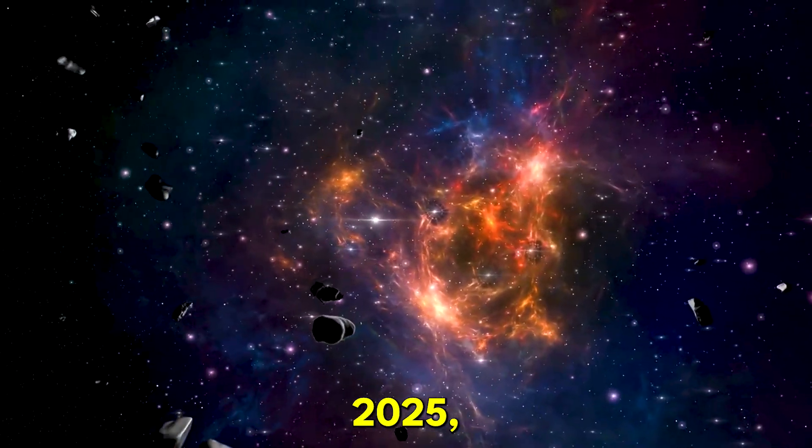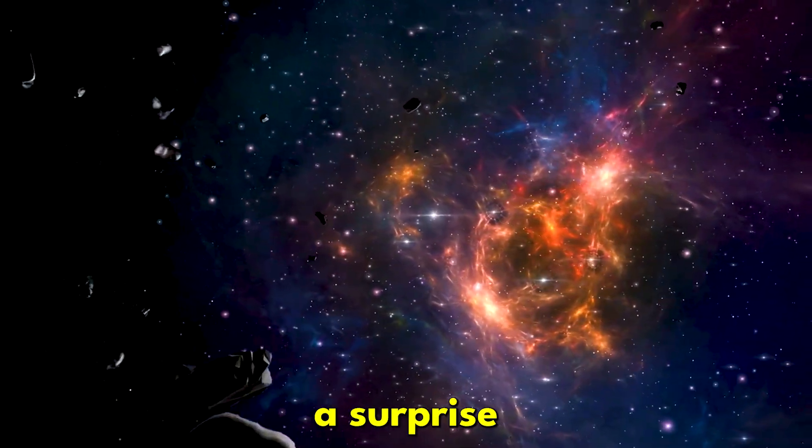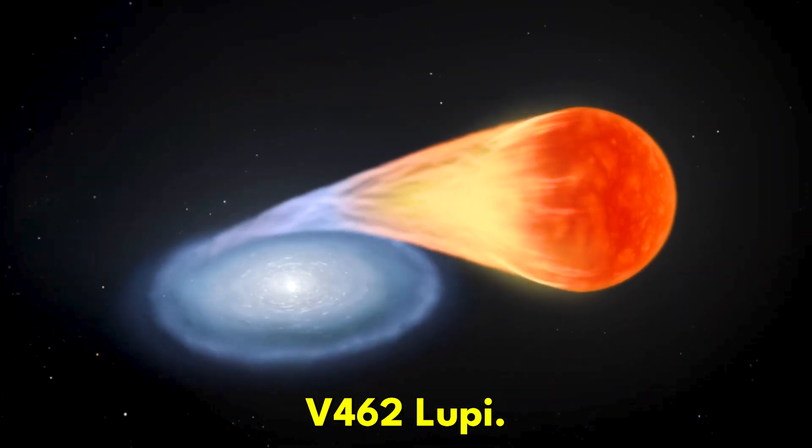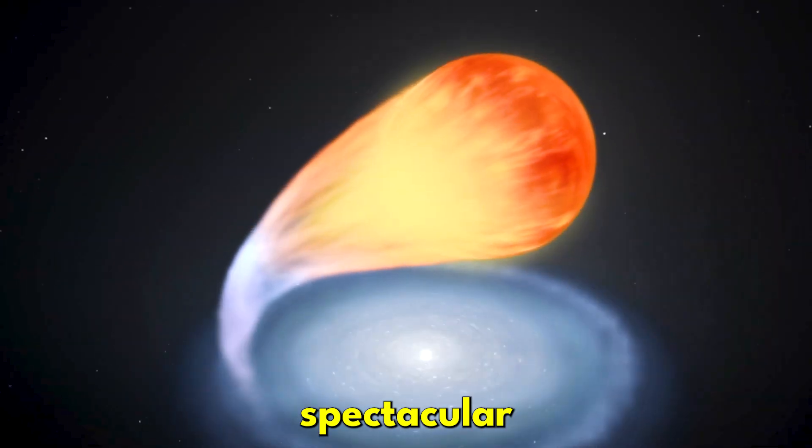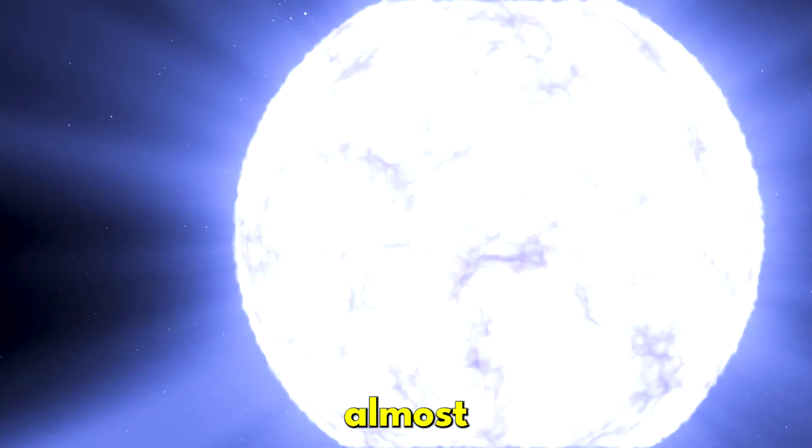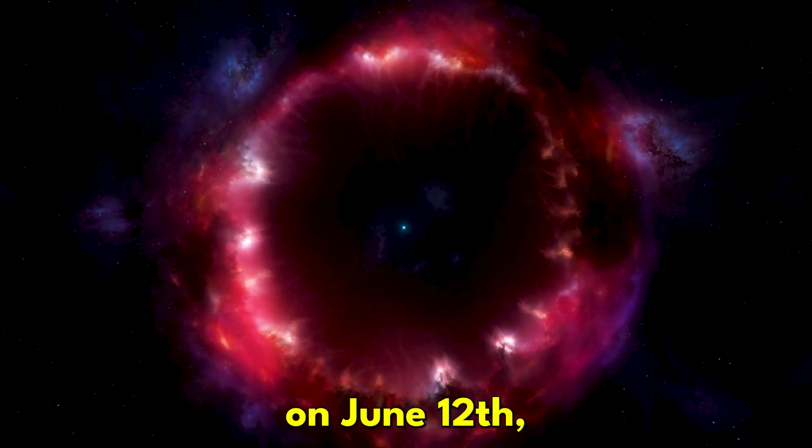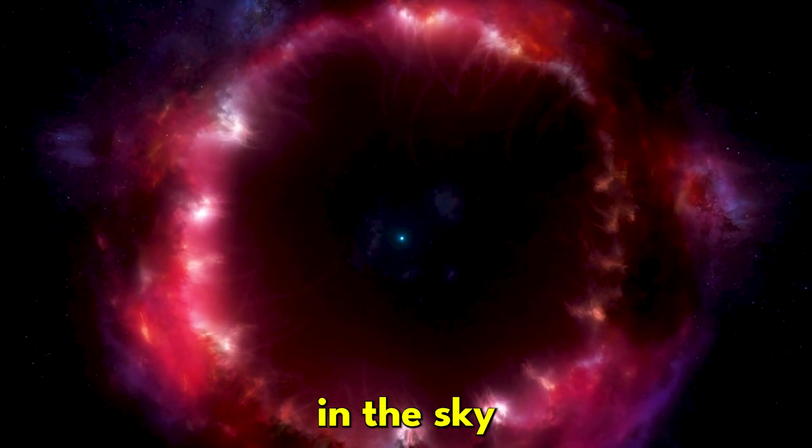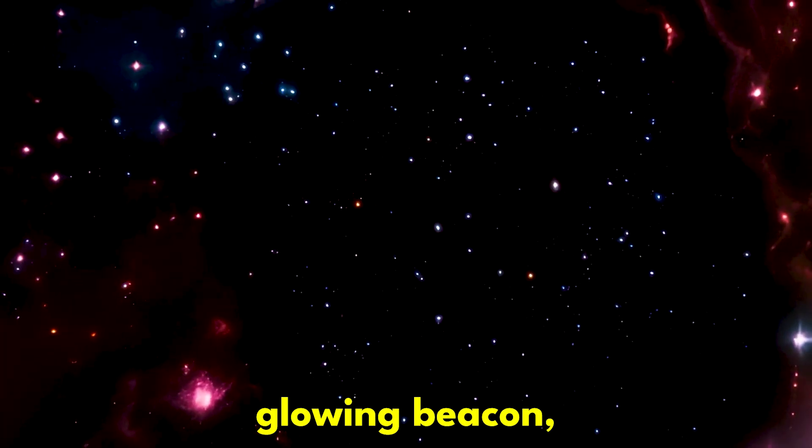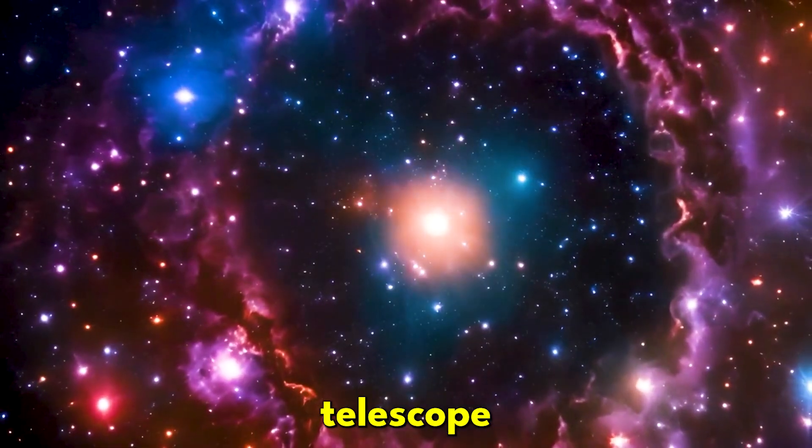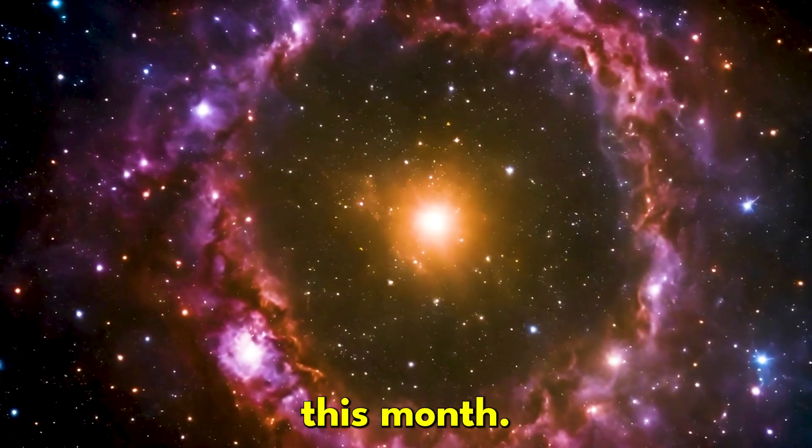In mid-June 2025, the universe threw a surprise party. A star system named B462 Loopy erupted in a spectacular nova, becoming 4 million times brighter almost overnight. Discovered on June 12, this stellar explosion transformed a faint dot in the sky into a glowing beacon, reaching a brightness visible without any telescope by June 18 this month.